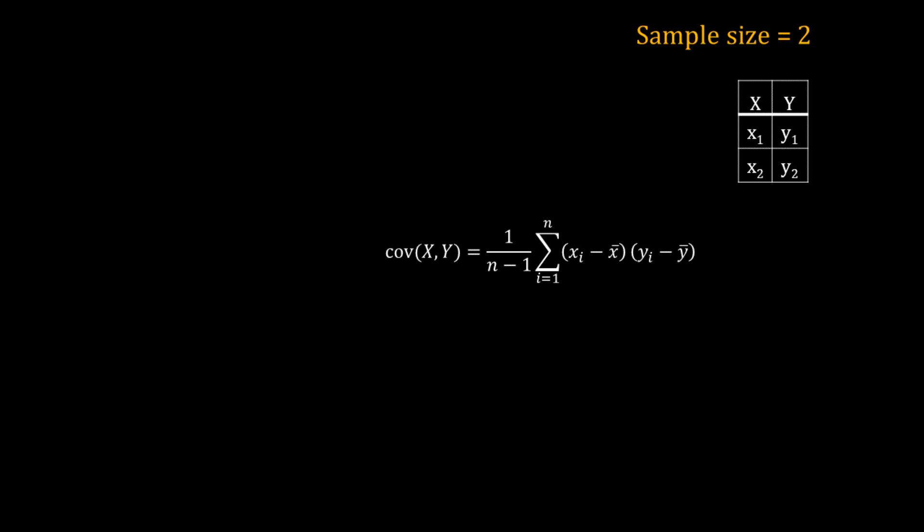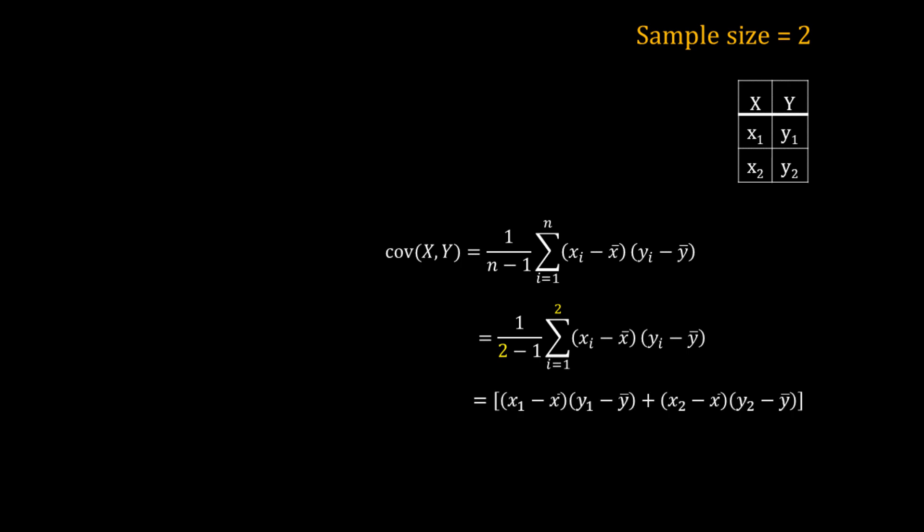Here is the formula. Covariance between x and y is equal to 1 over n minus 1 into the summation of (xi minus x-bar) times (yi minus y-bar), where i varies from 1 to n and n is the sample size. For our example n equals 2. Expanding the summation gives (x1 minus x-bar)(y1 minus y-bar) plus (x2 minus x-bar)(y2 minus y-bar).